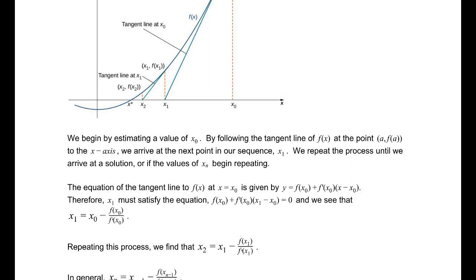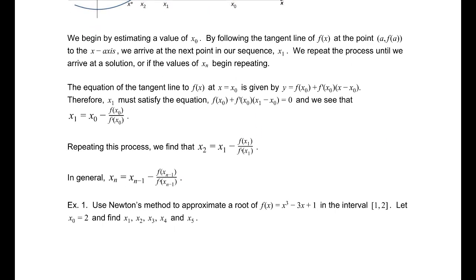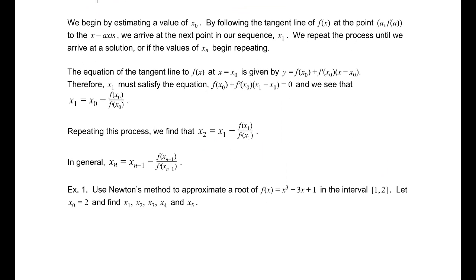And we repeat this — we find that x₂ is x₁ minus f of x₁ divided by f prime of x₁. And in general, xₙ equals xₙ₋₁, the last value, minus f of that last value divided by f prime of that last value.